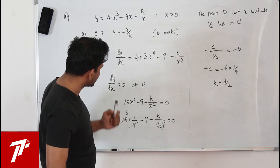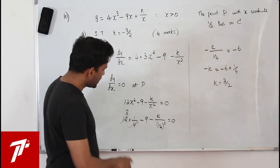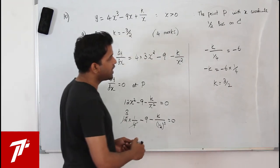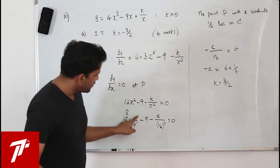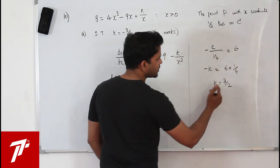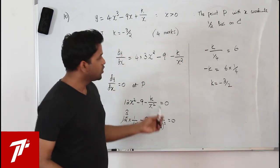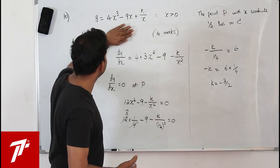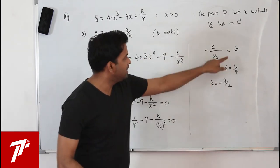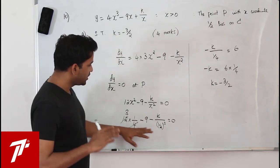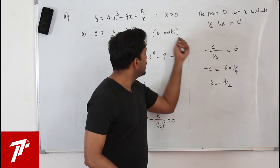Let's recheck: 3 minus 9 = minus 6. So minus 6 minus 4k = 0, meaning minus 4k = 6, giving k = minus 3/2. The negative sign must not be missed. Always double check your working so you don't lose marks.